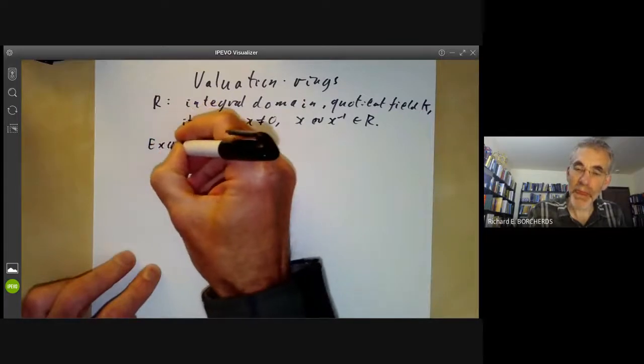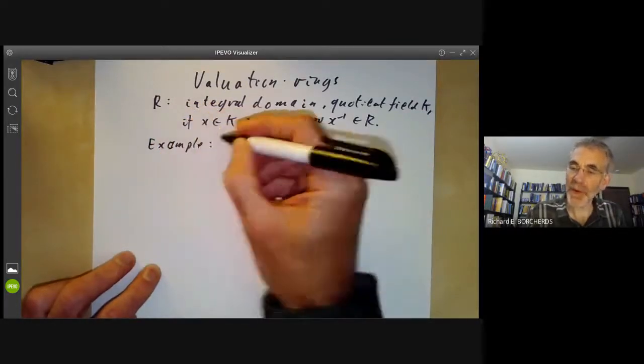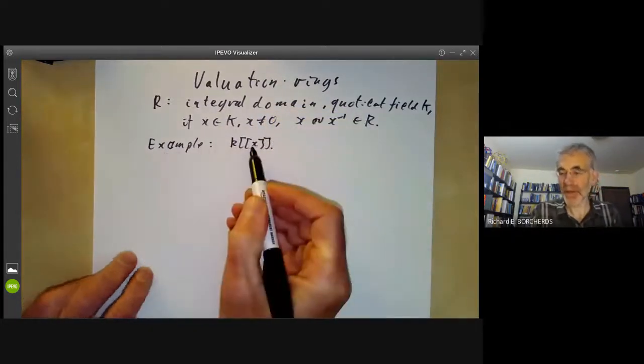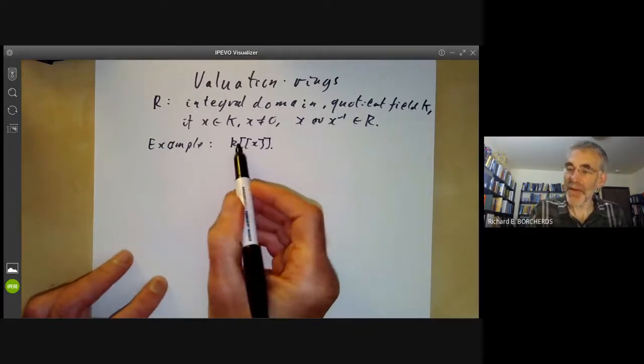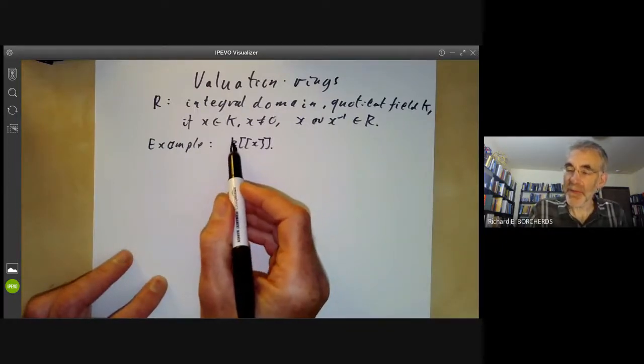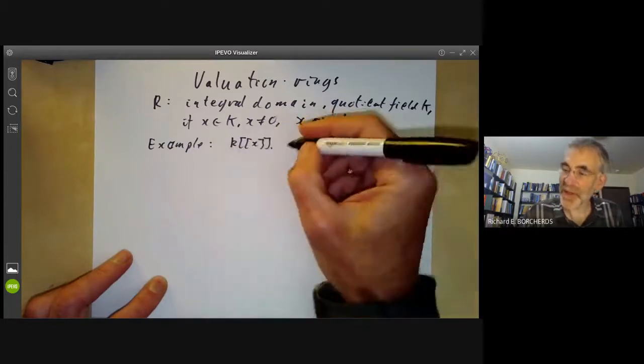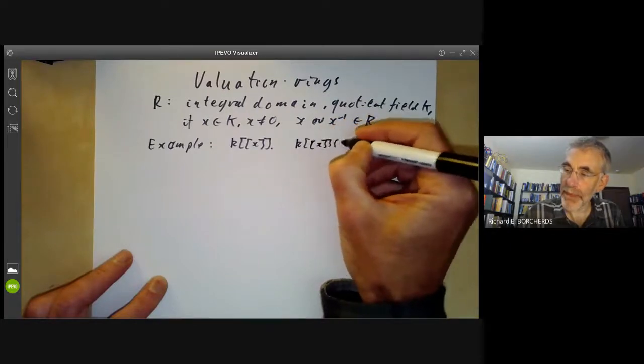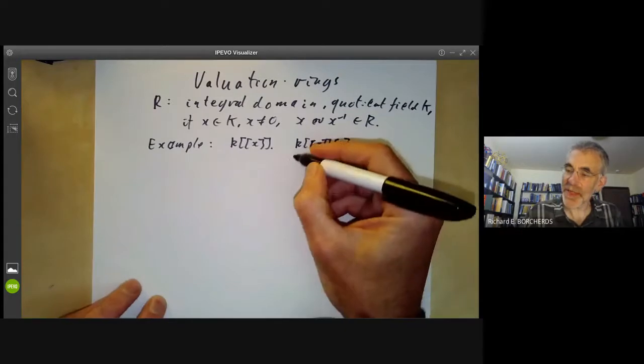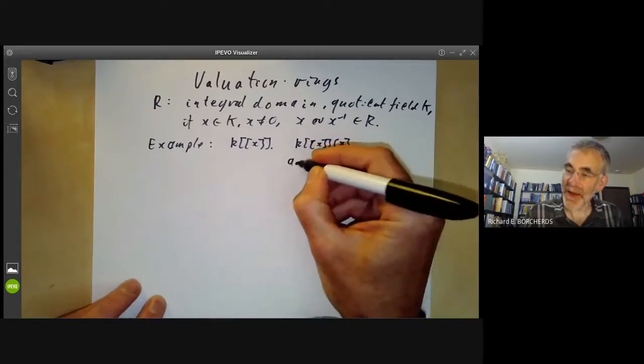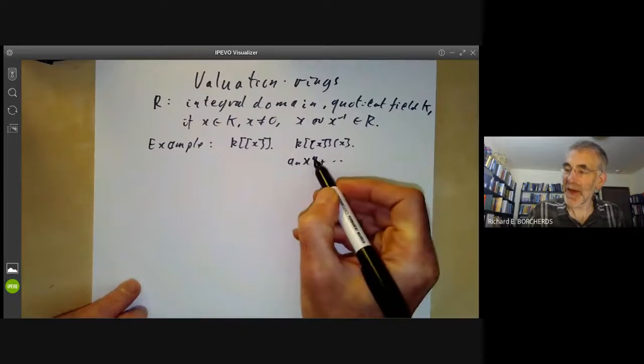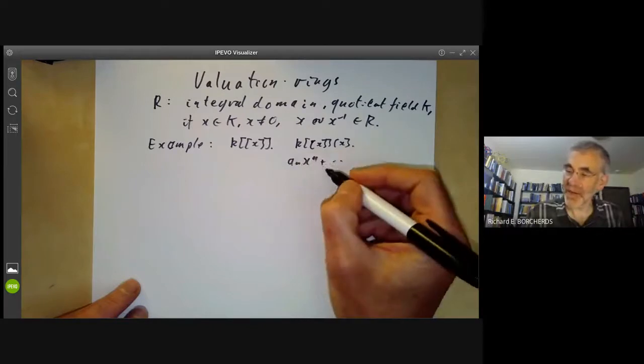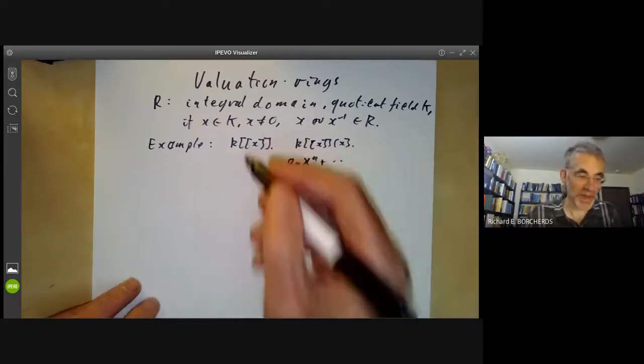Typical example: We could take the ring of formal power series over a field K. The quotient field consists of all the Laurent series. A Laurent series starts with X to the N for some N. If N is positive, it's in R. And if N is negative, its inverse starts with X to the minus N, and so is in R.